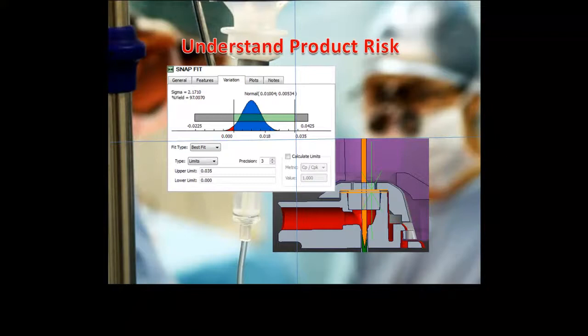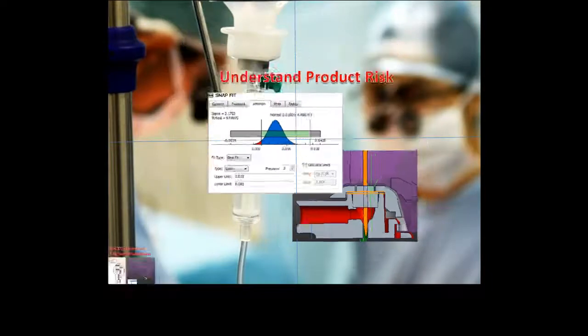CETOL Six Sigma calculates probabilities, not just worst cases. This better information enables you to manage product risk to minimize liability and maximize brand reputation.